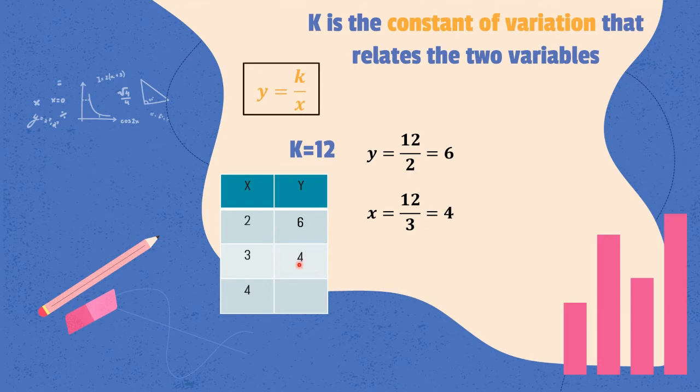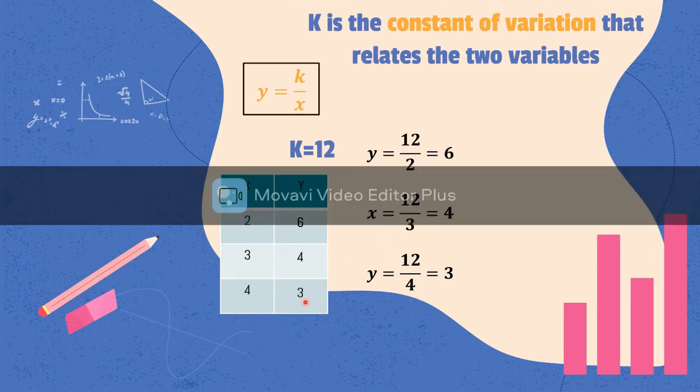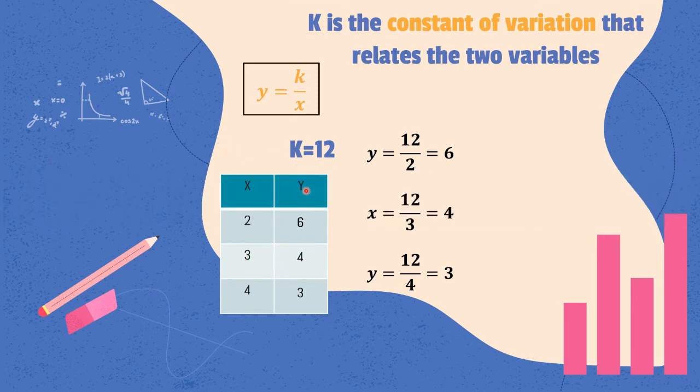Next, when x is 4, and k is still 12, we have 12 divided by 4. So, y is equal to 3. So, if we notice in our table of values, when x increases, y decreases. So, this is one thing we can observe in inverse variation.